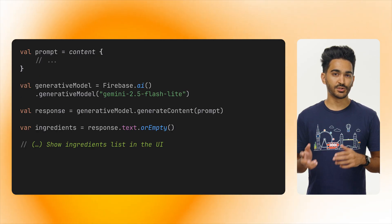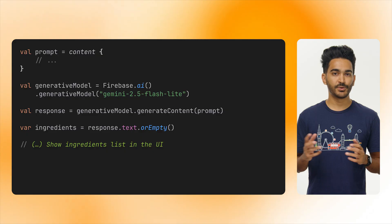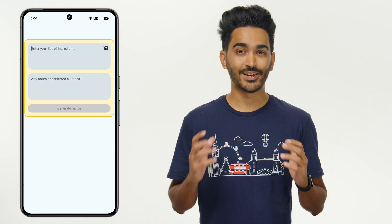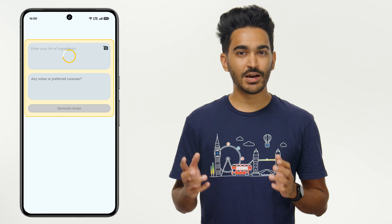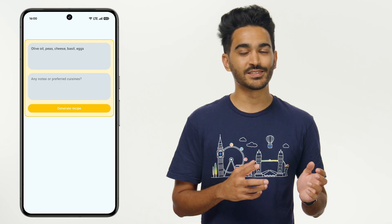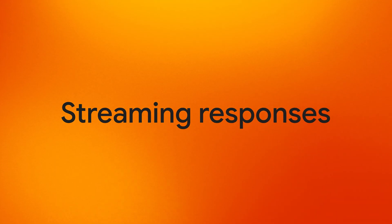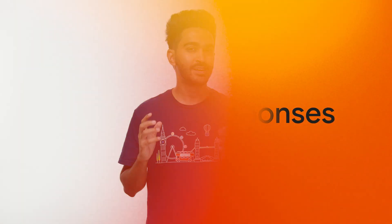We can then send this prompt to the generative model instance just like we did in the Getting Started video. Now when I run the app and select a photo of my fridge, Gemini will analyze it and then list the ingredients that it found. This is great, but did you notice that it takes a few seconds for the app to show all of the ingredients? We could make this experience more seamless by streaming the response, which means that we don't have to wait for the generation to complete and can show partial results on the UI.